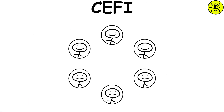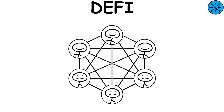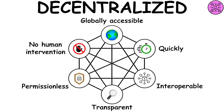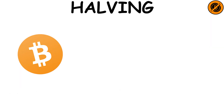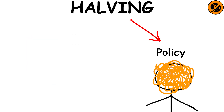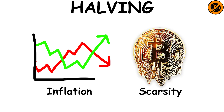CeFi: centralized finance is a financial ecosystem where centralized authorities control financial assets and the flow of money. DeFi: offers decentralized banking and financial services, therefore without intermediaries. Decentralized: it refers to the transfer of control and decision-making from a centralized entity, whether it be an individual or an organization, to a distributed network. Halving: Bitcoin halving is when the reward for Bitcoin mining is cut in half and takes place every four years. The halving policy was written into Bitcoin's mining algorithm to counteract inflation by maintaining scarcity.